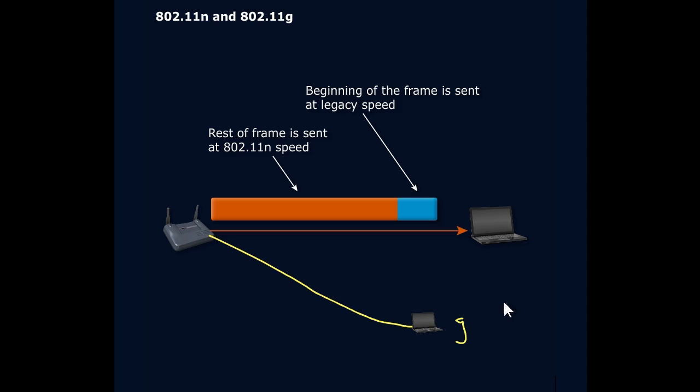Let's say I have a G client and an N client. When the access point recognizes that we have a G client on the network, it has to ensure that the G clients can hear the noise that's out there, even though that's being transmitted using a different set of modulation techniques available to communicate with N. The way it does that is by ensuring that the frame is sent at the legacy speed, meaning the legacy modulation mechanisms, when communicating between the access point and N.